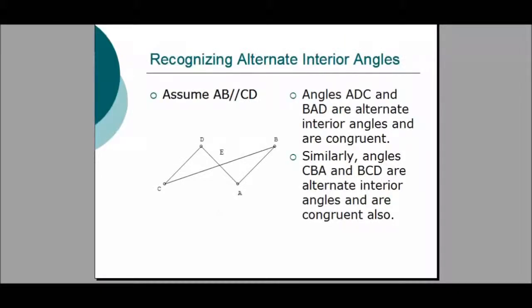Now learn how to recognize alternate interior angles. Assume that AB is parallel to CD. Therefore, Angle ADC and Angle BAD are alternate interior angles and they are congruent. Similarly, Angle CBA and Angle BCD are alternate interior angles and they are congruent as well.